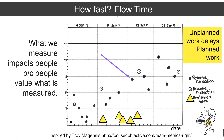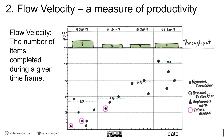Next up is flow velocity — a measure of productivity, also known as throughput. This answers the question: how many work items got done? It's extremely easy to calculate. For the first week of September, throughput was seven — just count the number of items completed that week. These are actual work items, not story points — real business value flowing through your value stream. In week two, three items were completed; week three, three items; week four, four items.